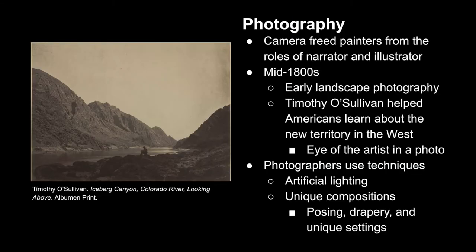Photography as a medium helps to bridge the gap between Romanticism and Realism. In the mid-1800s, we see early landscape photography developing. Artists like Timothy O'Sullivan helped Americans learn more about the territories of the West — and while this land definitely belonged to indigenous people, it was new to the people seeing these photographs. Utilizing the eye of the artist, each photo was meant to entice people to expand into the West. Beyond photographing the landscape, photographers were also utilizing new techniques such as artificial lighting, unique compositions, artistic posing, drapery, and specific settings. Because cameras could document exactly what was in front of them, it freed painters and other artists to do more than just document or illustrate.